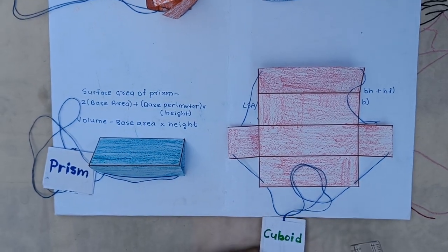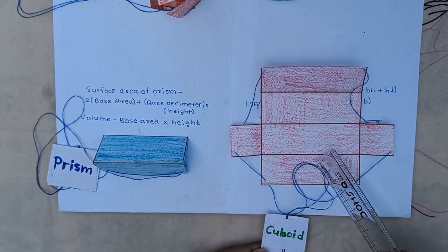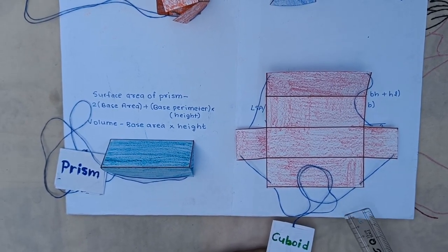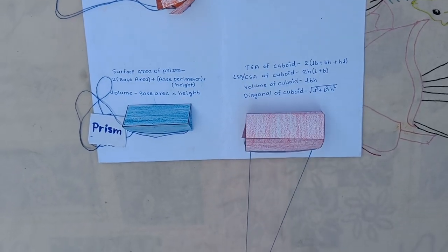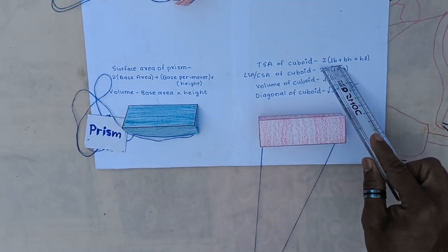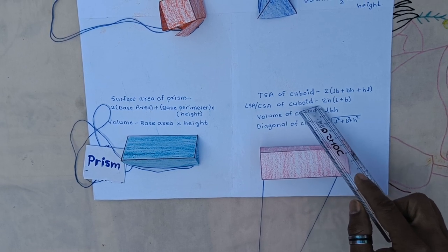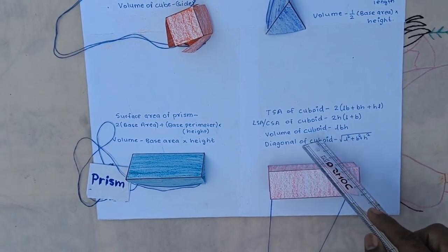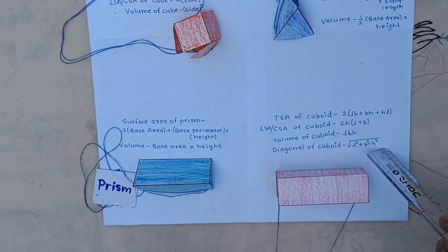In fourth, here is a cuboid. It has 6 faces: 1, 2, 3, 4, 5, 6. Its 4 faces are rectangle and other 2 faces are square. When we stretch, it becomes a cuboid. Total surface area of cuboid is 2 into LB plus BH plus HL, and curved surface area of cuboid is 2H into L plus B. Volume is LBH, and diagonal of cuboid is under root L square plus B square plus S square.